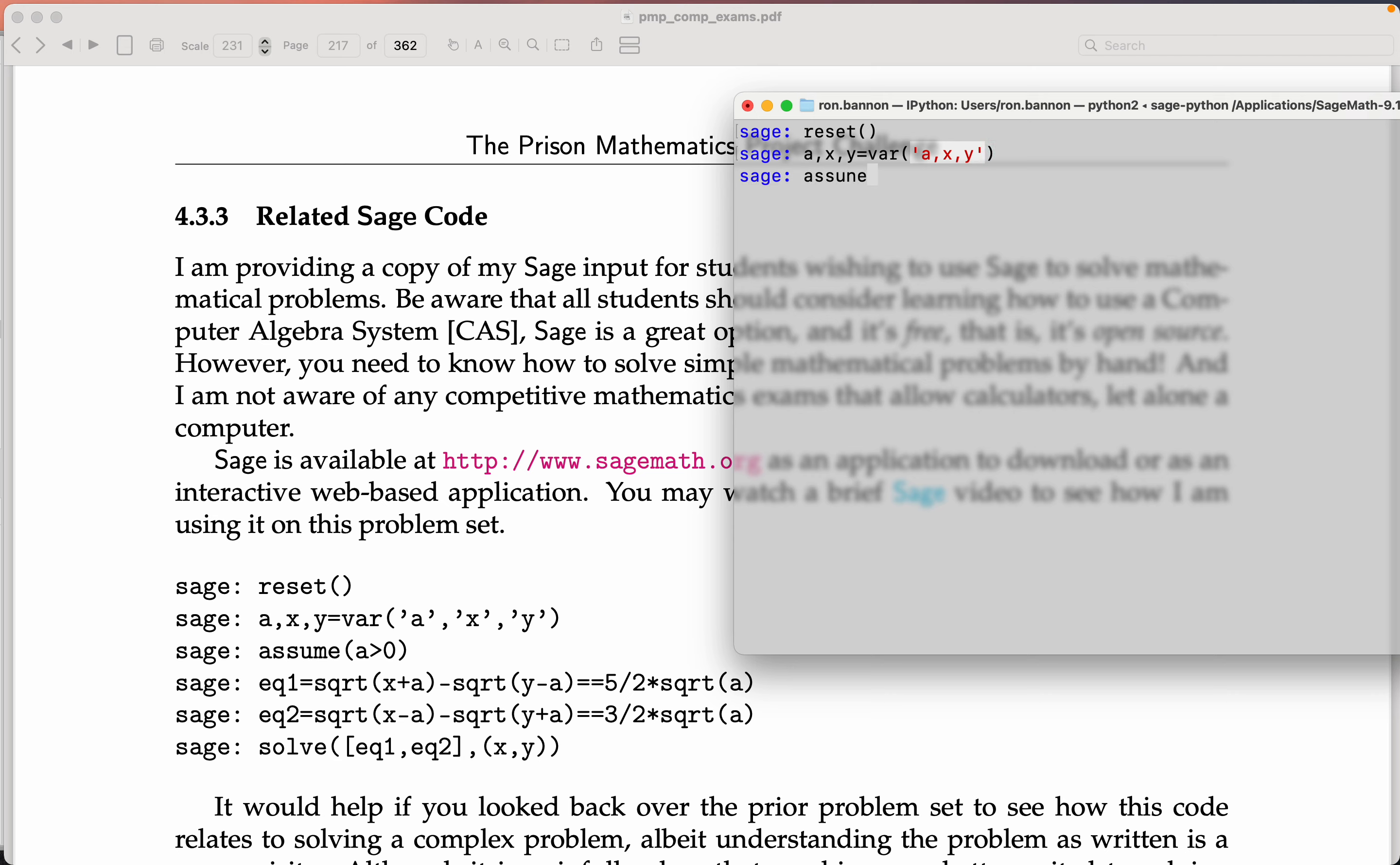And we've done that before. I assume, whoops, I'm going to assume A is greater than 0, positive number. Again, I look up and I notice I typed things wrong, so that's why I'm backing up. I'm going to assume A is a positive number.